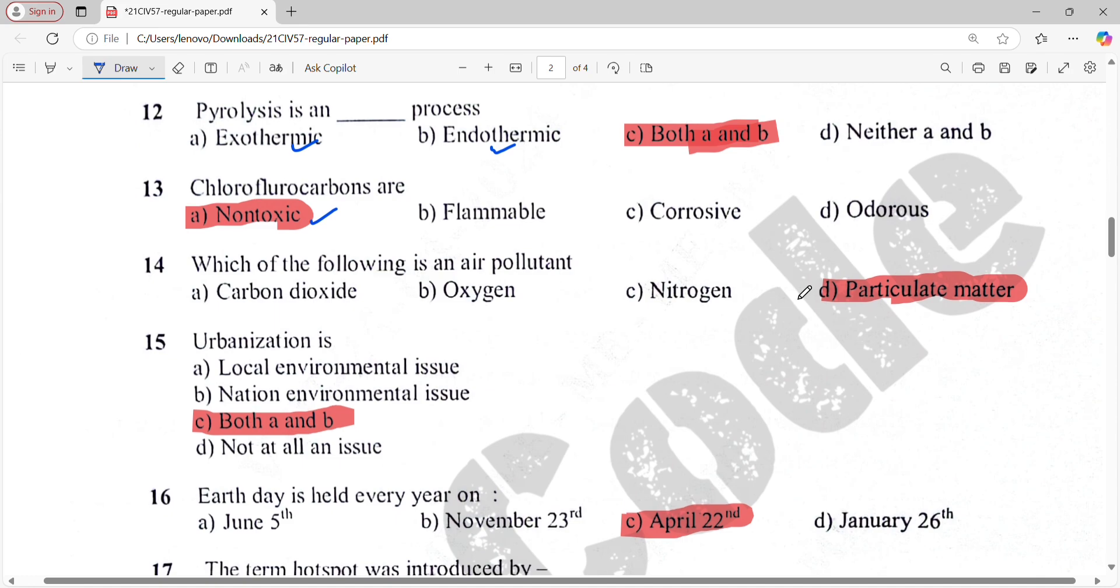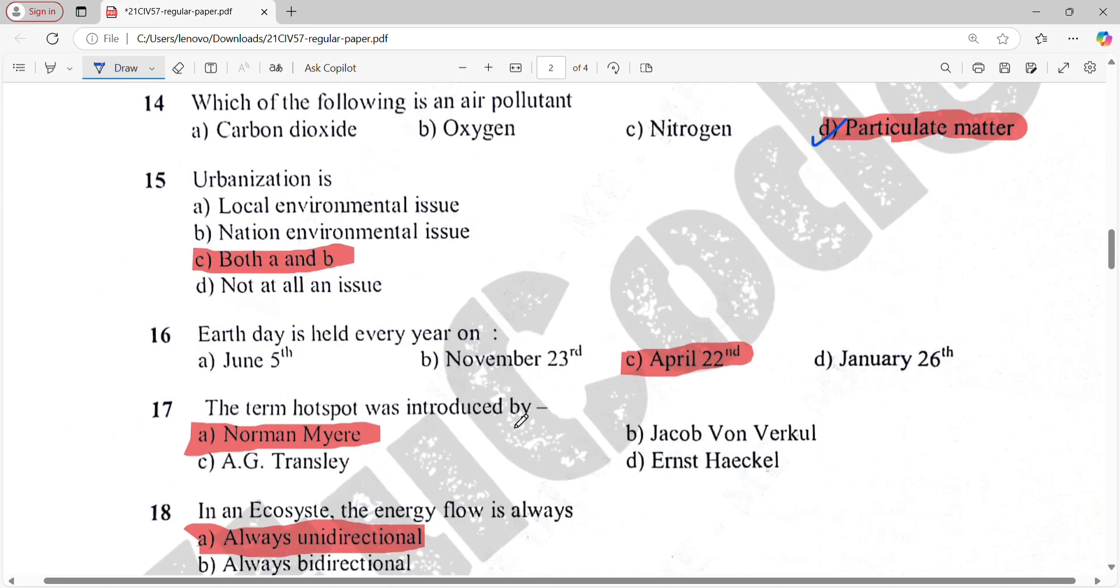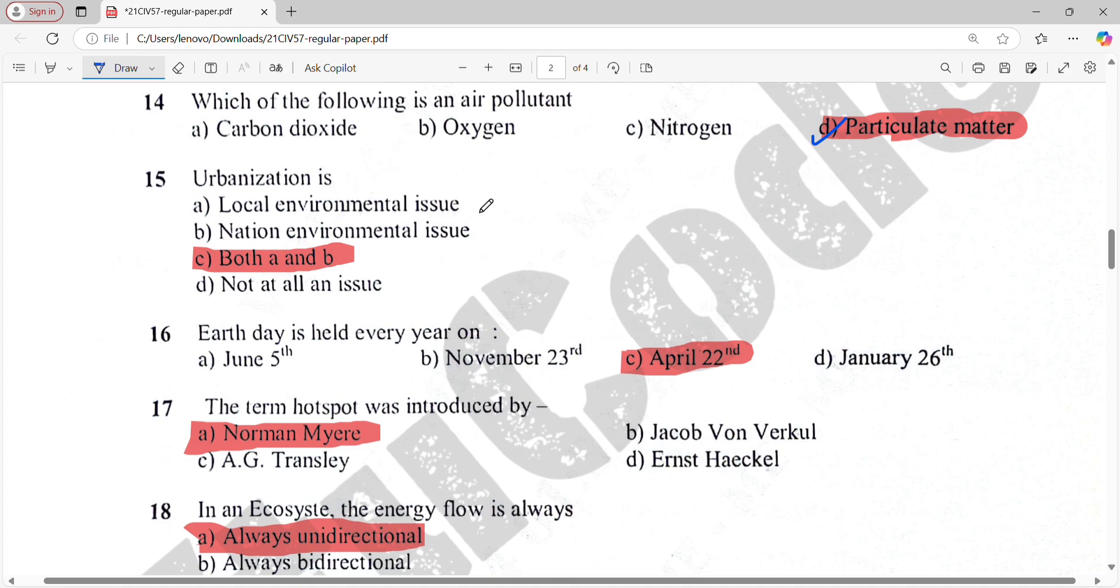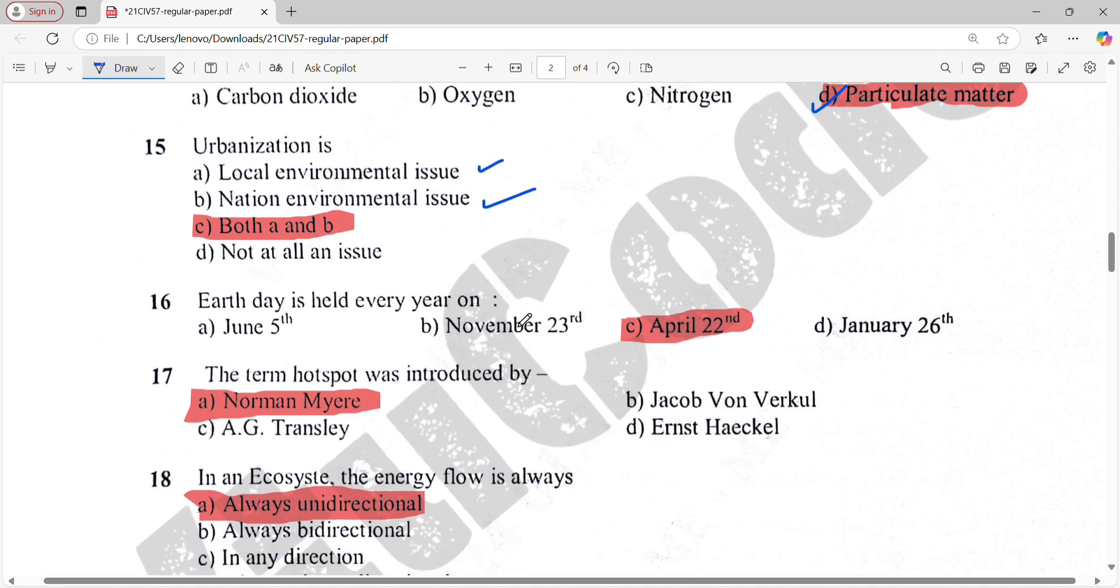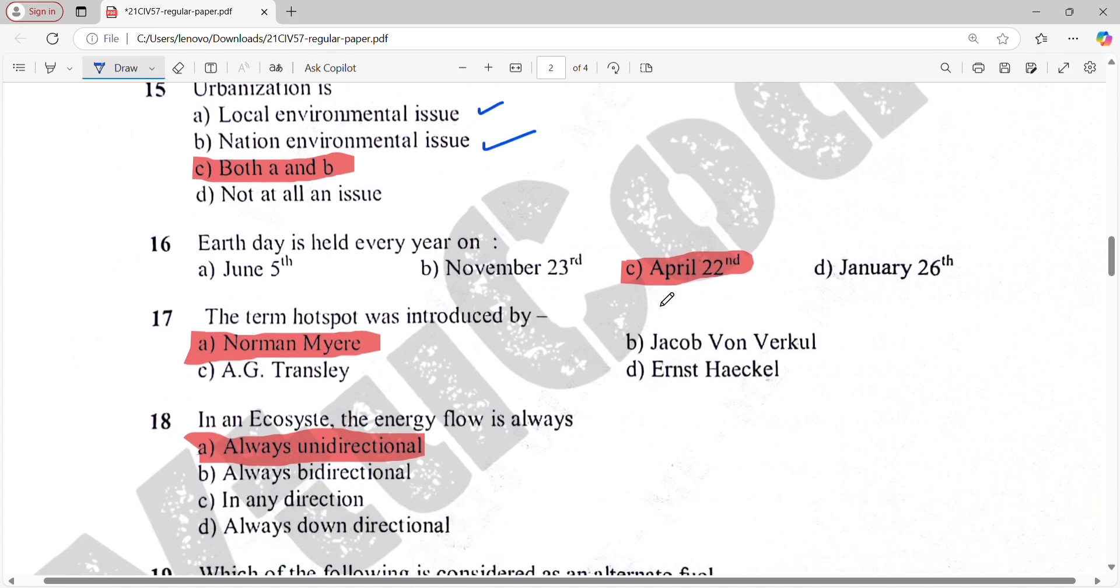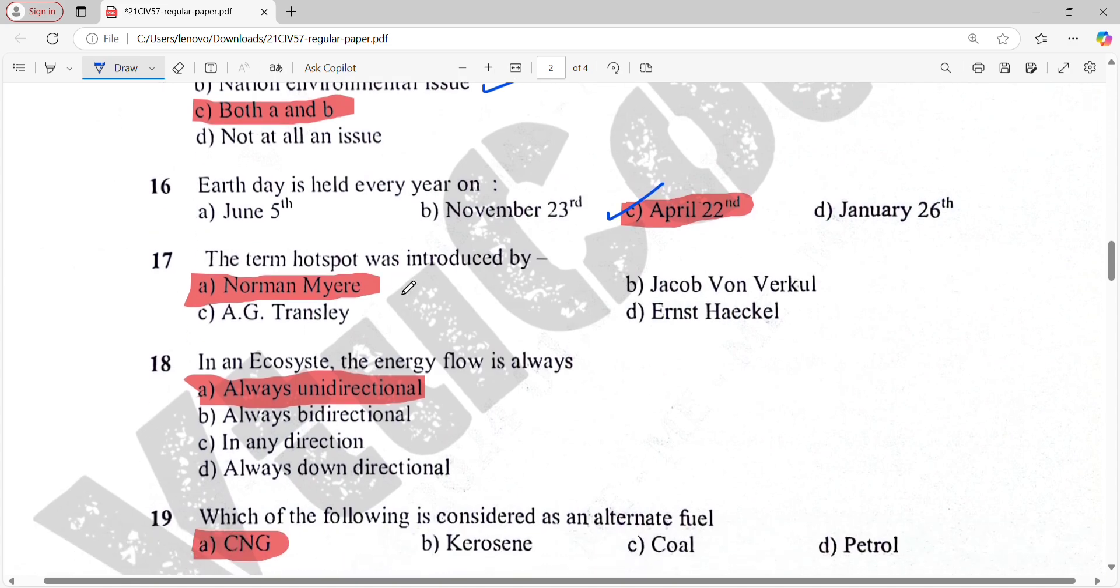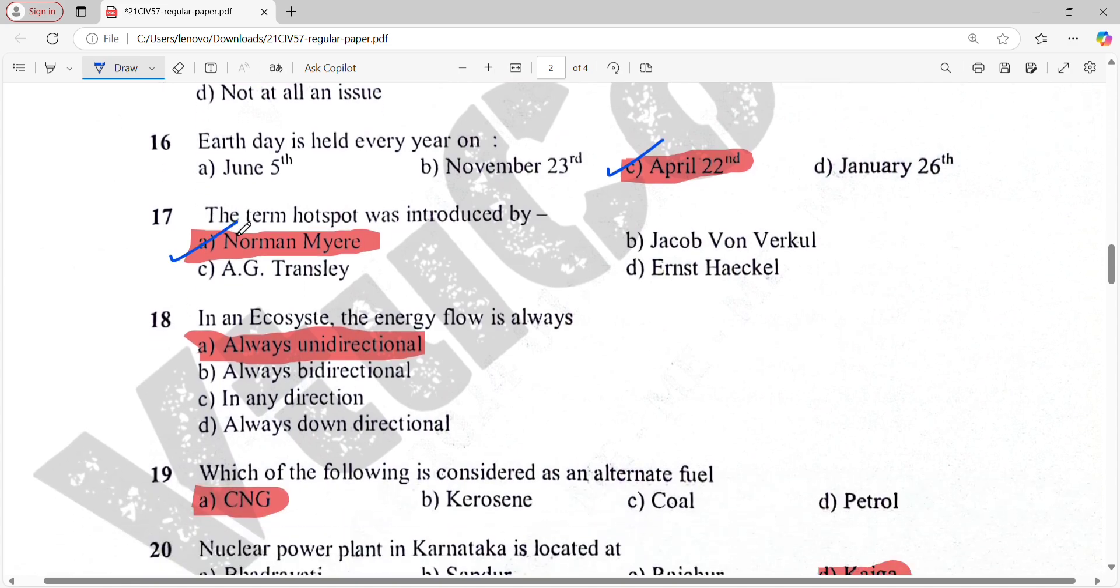Which of the following is an air pollutant? That is particulate matter. Urbanization is both A and B - that is local environmental issue and national environmental issue. Earth Day is held every year on April 22nd. The term hotspot was introduced by Norman Myers.